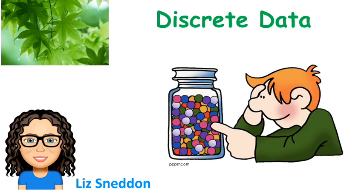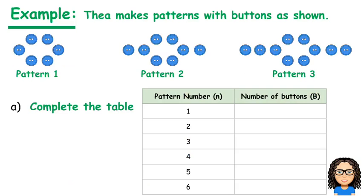Let's have a look at discrete data patterns. So discrete data means we've got whole numbers. Like in this example here, we've got Thea making patterns with some buttons. So you have to have a whole number of buttons. You can't have a half button. You've either got one or you don't. So that's why this is discrete data.